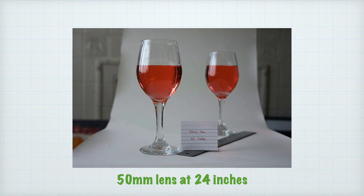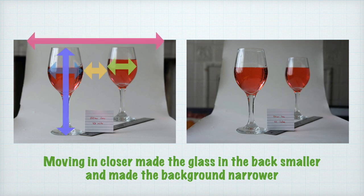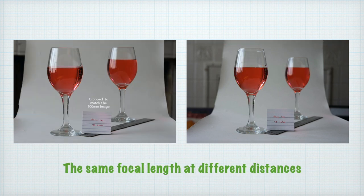If the camera with the 50mm lens is moved in to half the distance — 24 inches — to fill the frame the same way, now the perspective and size relationship between objects in the scene changes. The glass in front remains the same height, but the glass in the back looks smaller and both appear thinner. The arrows show dramatic changes in the size relationships. The glass in front stays the same size because we halved both the focal length and the camera-to-subject distance, but everything else changed. You can also see how the background paper appears wider when the camera is farther away — if you're running out of background, moving back farther can gain a bit of width.